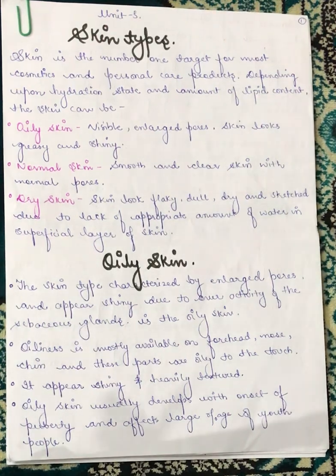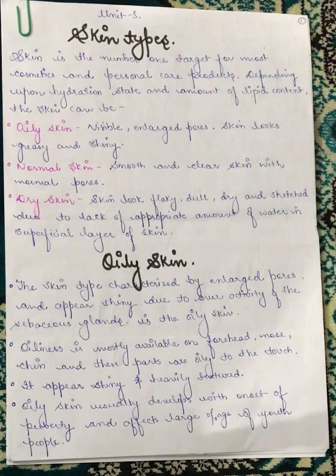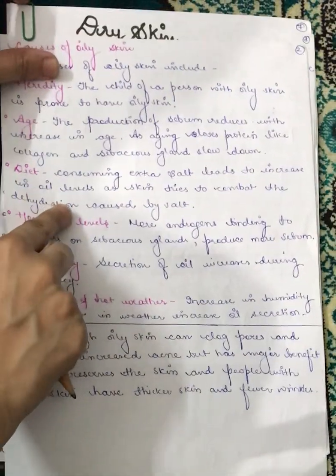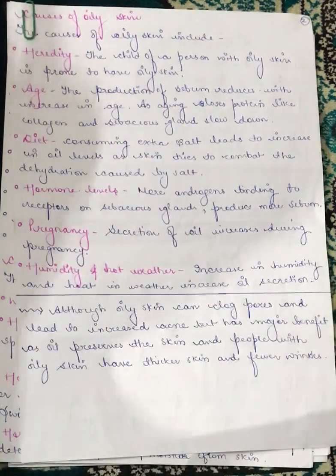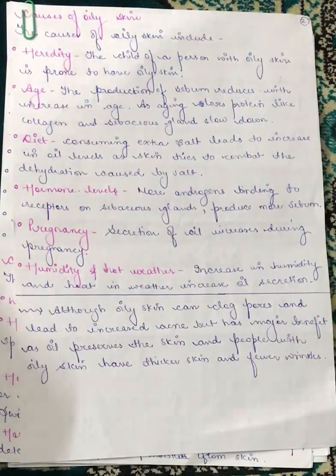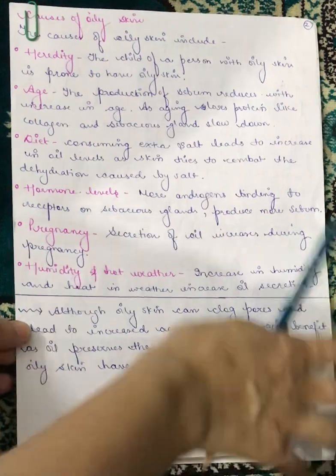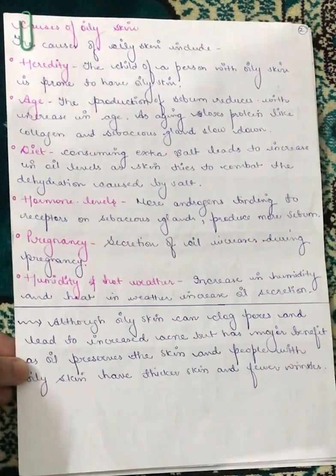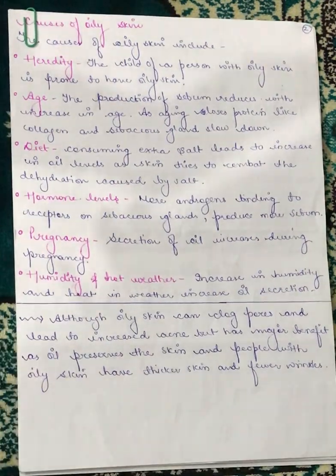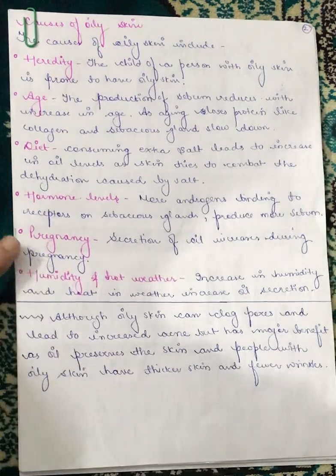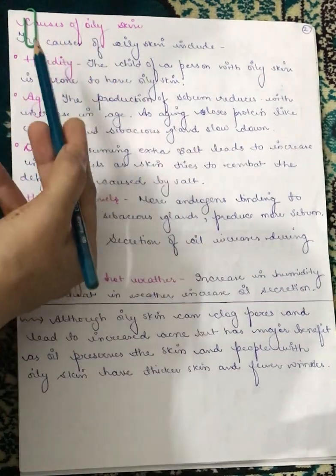Looking at skin type distribution, mostly three out of five people have oily skin and two out of five have dry skin. So the ratio of people with oily skin is greater than that of dry skin. The causes of oily skin include several factors.